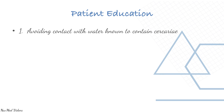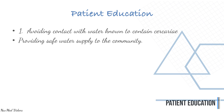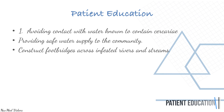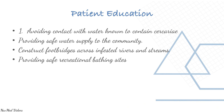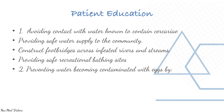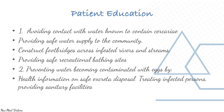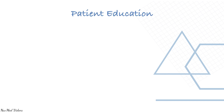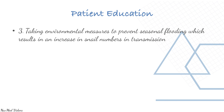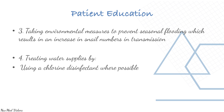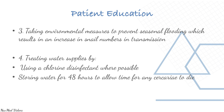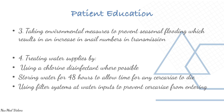Patient education is very important. Measures include: avoiding contact with water known to contain cercariae; providing safe water supply to the community; constructing footbridges across infested rivers and streams; providing safe recreational bathing sites; preventing water contamination with eggs through health education on excreta disposal, treating infected persons, and providing sanitary facilities. Environmental measures include preventing seasonal flooding to reduce snail numbers, treating water supplies with chlorine disinfectant where possible, storing water for 48 hours to allow cercariae to die, and using filter systems to prevent cercariae from entering water supplies.